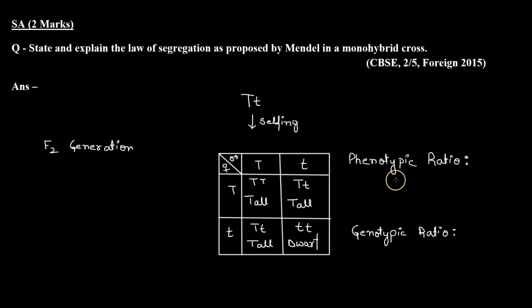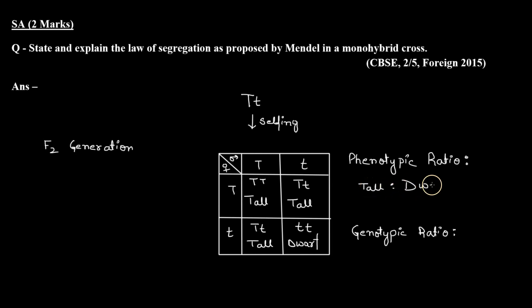If we look at the phenotypic ratio in the F2 generation, three plants have come out tall and one plant has come out dwarf. So the phenotypic ratio will be 3 to 1.